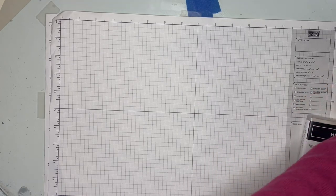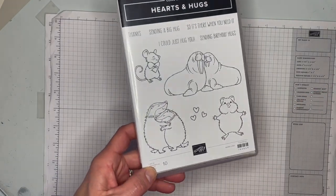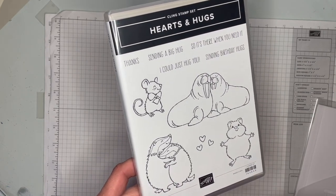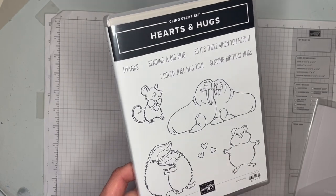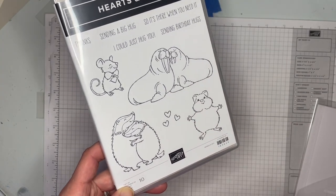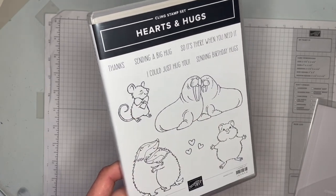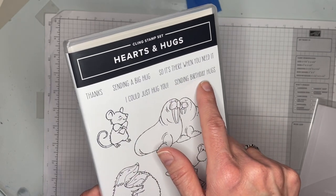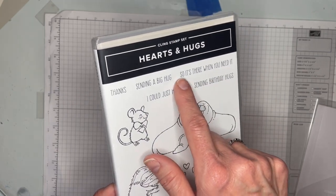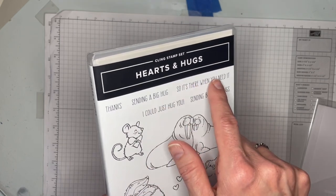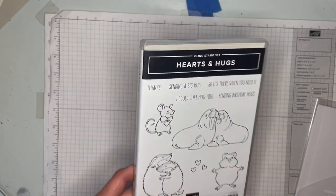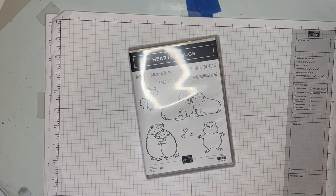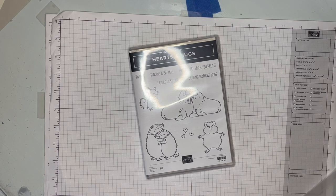All right. My next one is another bundle, the hearts and hugs bundle. Got to have some cutesy animals. Like look at these cute little badgers and a little gerbil slash hamster. You can't see his tail. So you can call it whatever you want. The walrus, little mice. We've got some cute, just basic sentiments. I could just hug you sending birthday hugs. So it's there when you need it. Sending a big hug. Thanks. That's really cute. Those are good for all purpose cards. Hello cards. Kid cards.